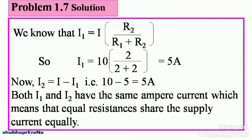We know that I1 is equal to I into R2 divided by R1 plus R2. You learned this formula. It was a special type of circuit when there were only two resistances in parallel. So, I1 is equal to 10 whole thing into 2 divided by 2 plus 2. Calculating it, we get 5 amperes.